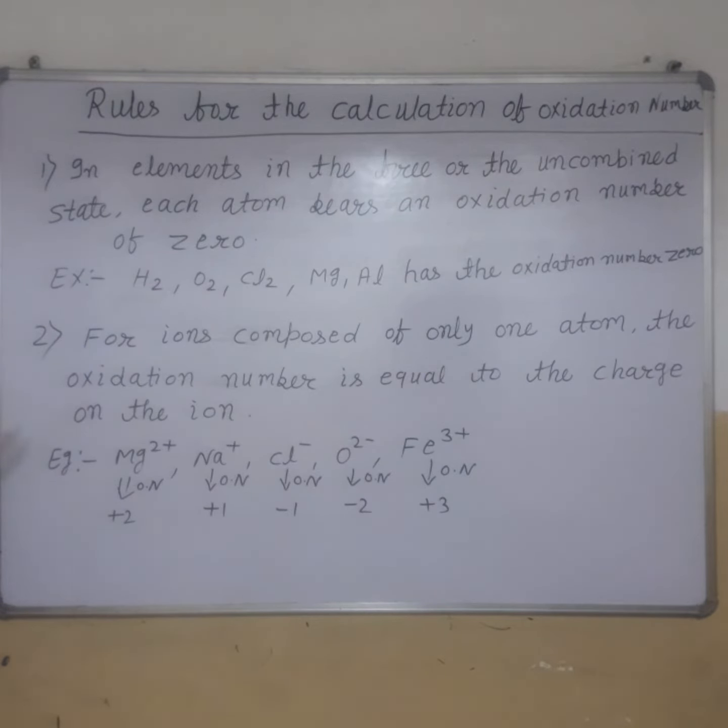For example, H2, O2, C2, and S have oxidation number of zero. Second rule: for ions composed of only one atom, the oxidation number is equal to the charge on the ion.